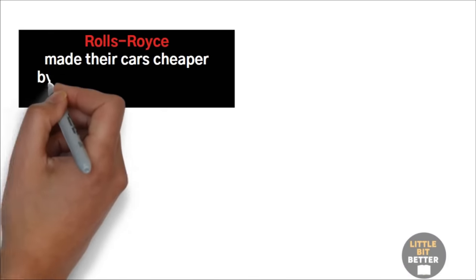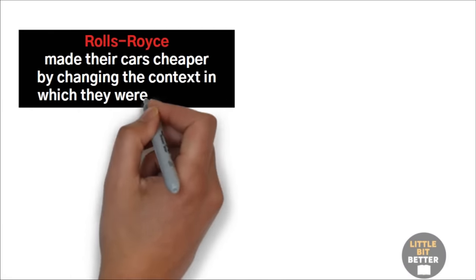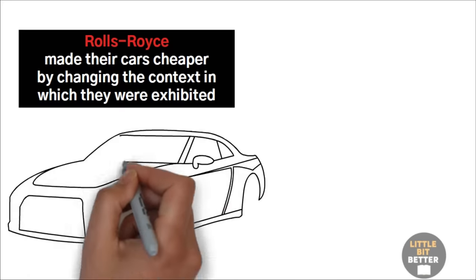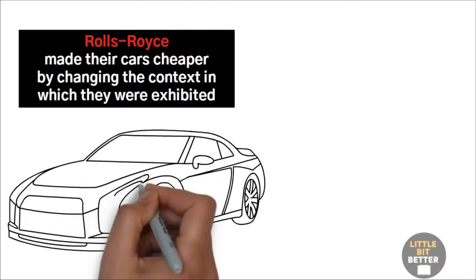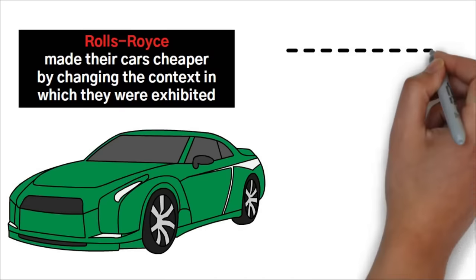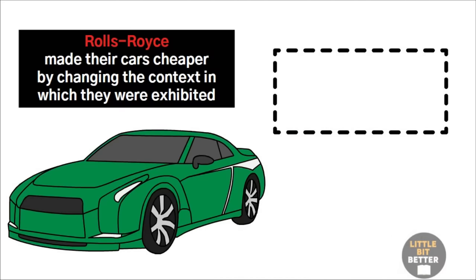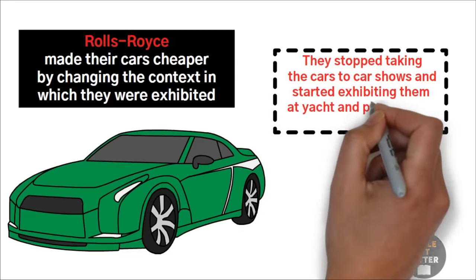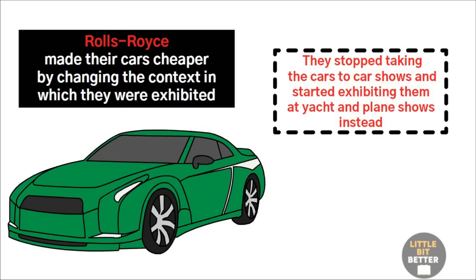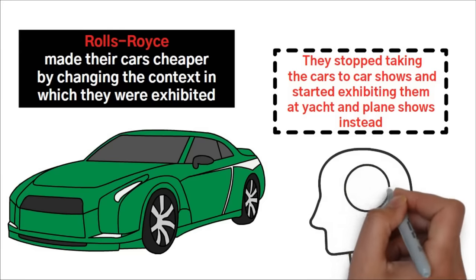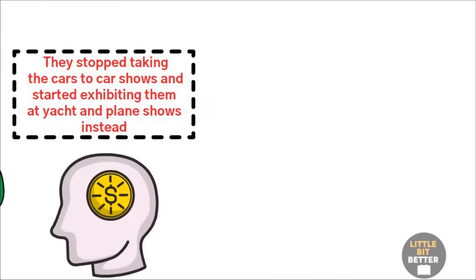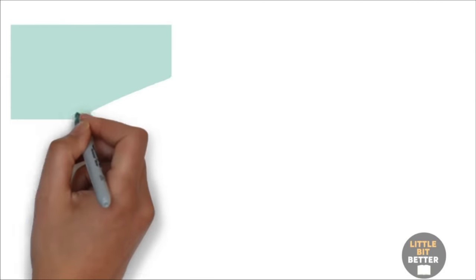One more example from the car industry. Rolls-Royce made their cars cheaper by changing the context in which they were exhibited. They used to exhibit them at car shows, as usual. But there they looked absurdly expensive compared to the other cars. So they came up with a very smart move. They stopped taking the cars to car shows and started exhibiting them at yacht and plane shows instead. Now, if you've been looking at airplanes and boats all afternoon, a $250,000 car looks pretty cheap in comparison.